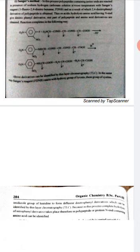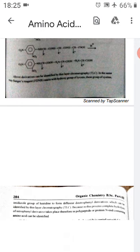Different dinitrophenyl derivatives are formed when different amino acids react with Sanger's reagent. The compound obtained — the dinitrophenyl derivative of the particular amino acid — when separated, is identified by thin layer chromatography. Because in this process complete hydrolysis of nitrophenyl derivatives takes place, the N-end containing amino acids in polypeptides or proteins can be identified.